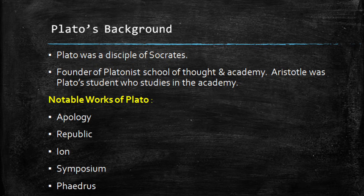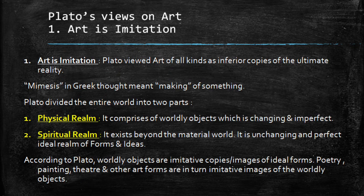We have also heard about the Greek philosopher Aristotle — Aristotle was Plato's student who studied in that particular academy. The notable works of Plato include works like Apology, Republic, Ion, Symposium, and Phaedrus. In this session you will hear a lot of reference to Republic, because in that particular work he mentioned his ideal state of society, which does not include poets.